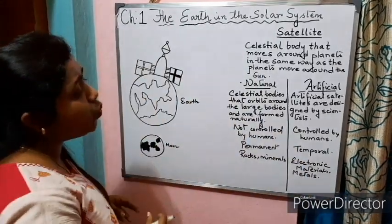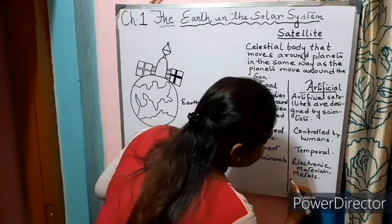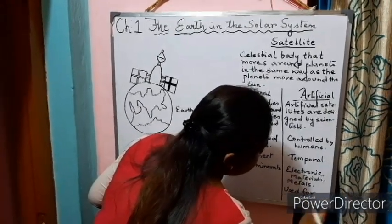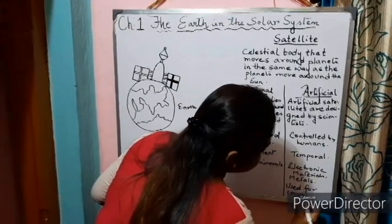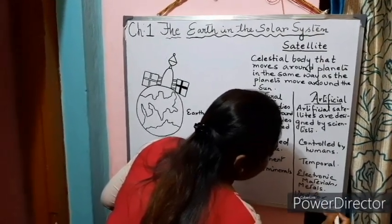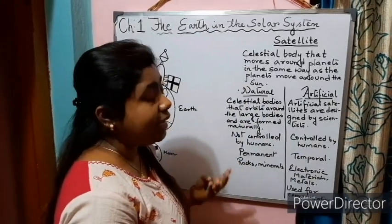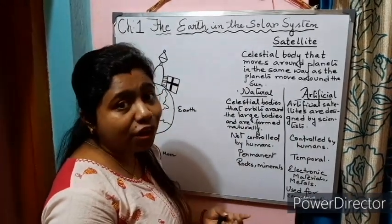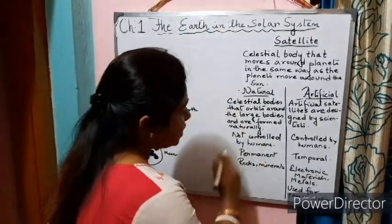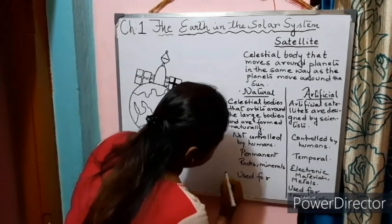What is the use of artificial satellites? They are mainly used for communication, and they are used by scientists to gather information about space. Natural satellites are not used for communication.